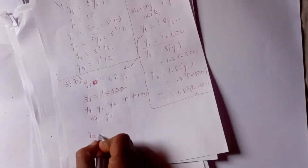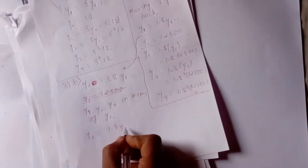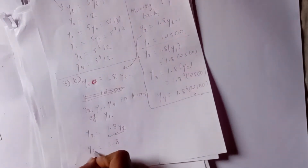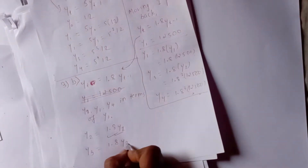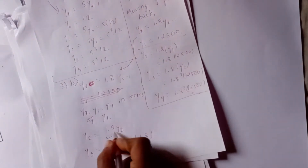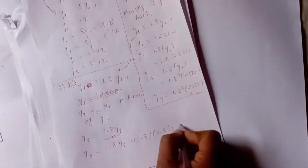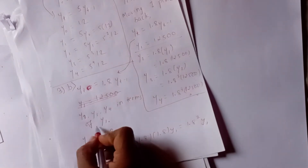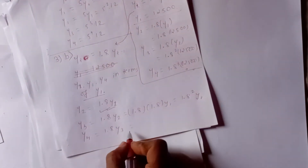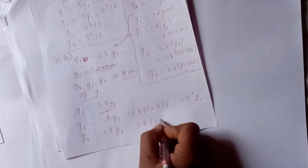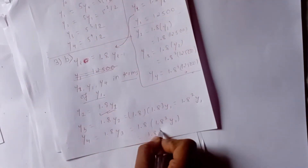So y2 equals 1.8 times y1. Because yt plus 1 equals 1.8 times y1. Since y equals y1, we have y2 equals 1.8 times y1. Then y3 equals y2, so y3 equals 1.8 squared times y1. And y4 equals 1.8 cubed into y1.